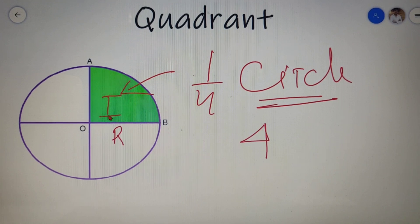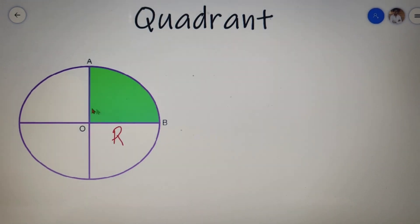This quadrant is taken as the first quadrant, this as second, this as third, and this as the fourth quadrant. The angle contained at the center of a quadrant is always a right angle. So I can say that angle AOB is equal to 90 degrees.